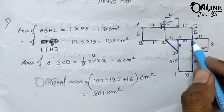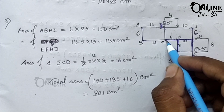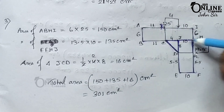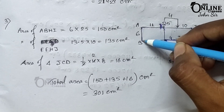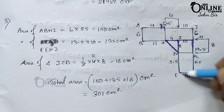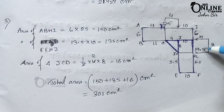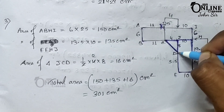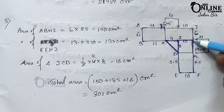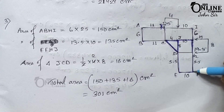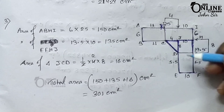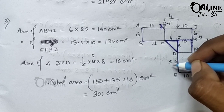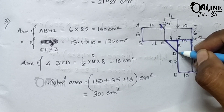Find the area of each rectangle and the triangle, then add all three. For the upper rectangle: length 25 times breadth 6. For the lower rectangle: length 13.5 times breadth 10 equals 135. For the triangle: HF equals 13.5, so JE also equals 13.5. Since DE equals 5.5, DJ equals 13.5 minus 5.5, which equals 8 centimeters.